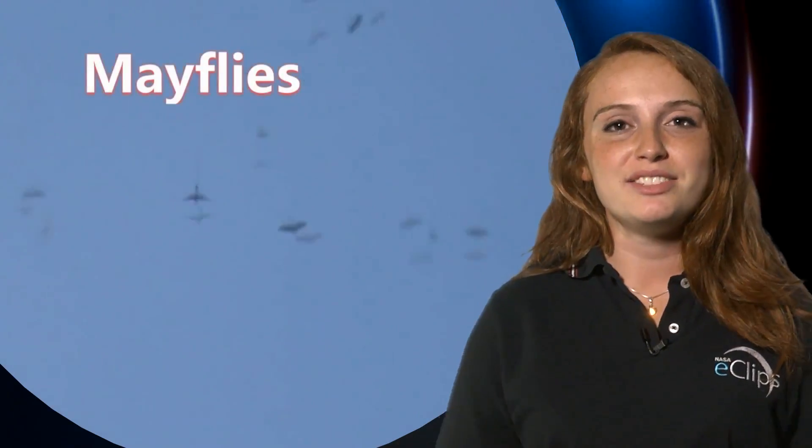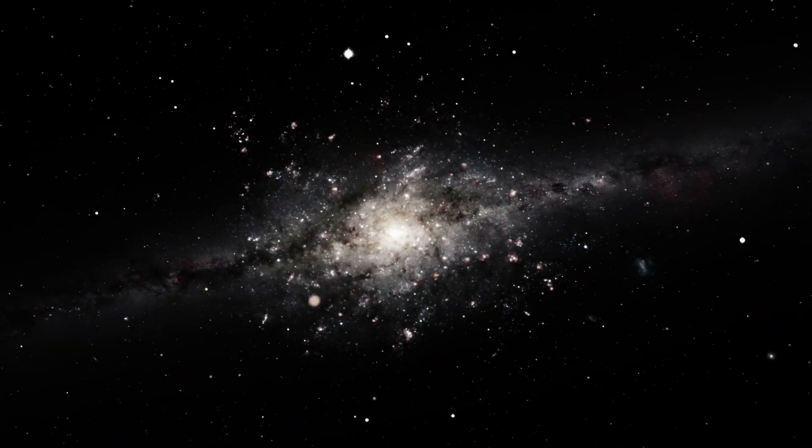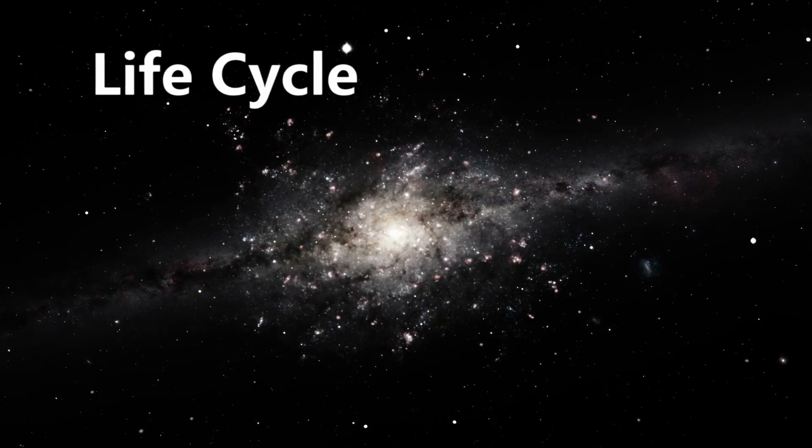Most things in the universe have a life cycle. Thankfully, for some things, like these guys, the life cycle is incredibly short. But for other things, like stars, the life cycle can be billions of years long.